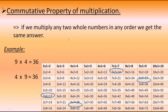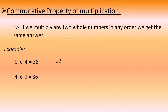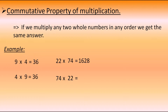Let's take one more example. I am taking the numbers 22 and 74. If I multiply them, I get the answer as 1,628. If I change the places of those numbers as 74 into 22, I still get the same answer as 1,628. From both examples, if we multiply any two whole numbers in any order, we get the same answer — that is the commutative property of multiplication.